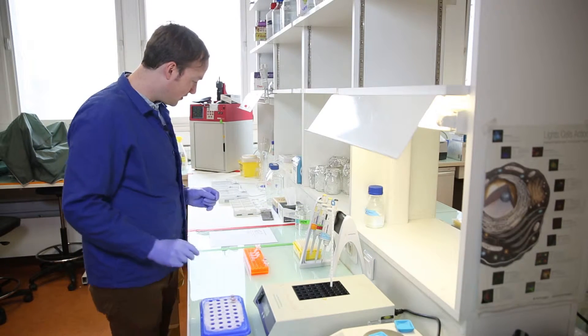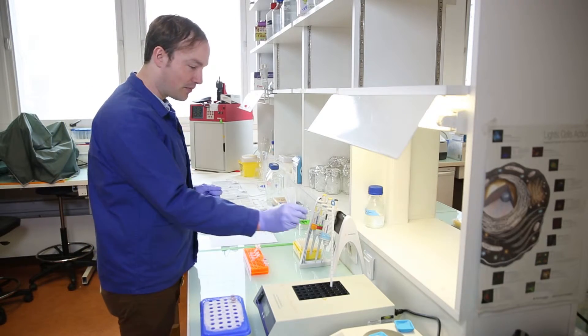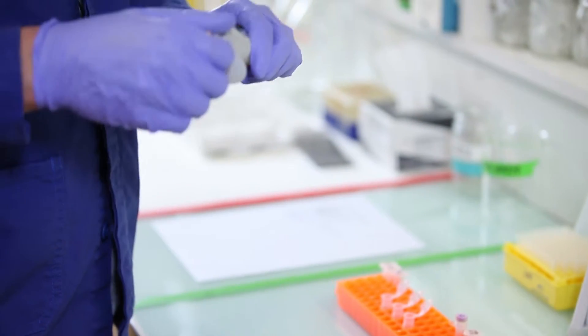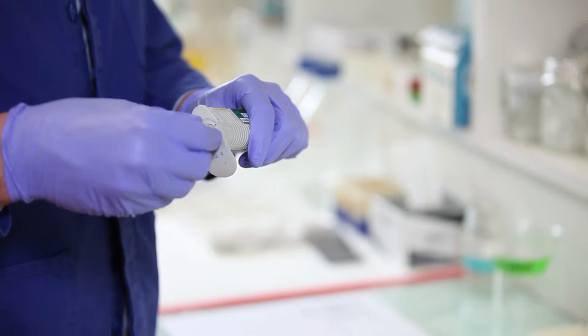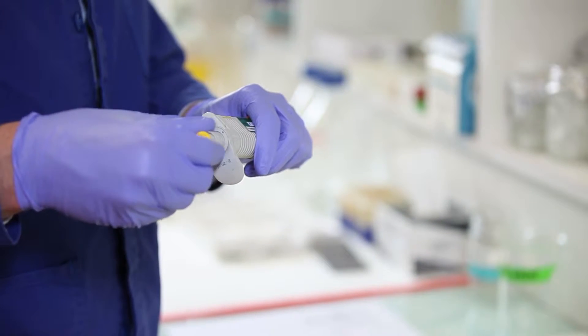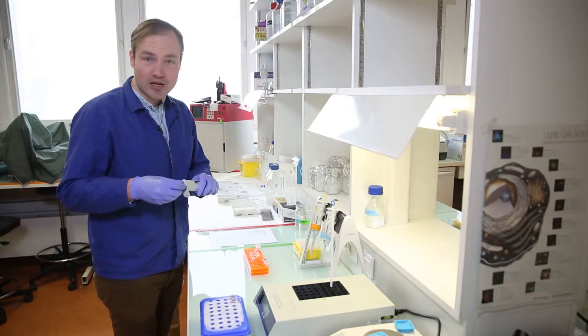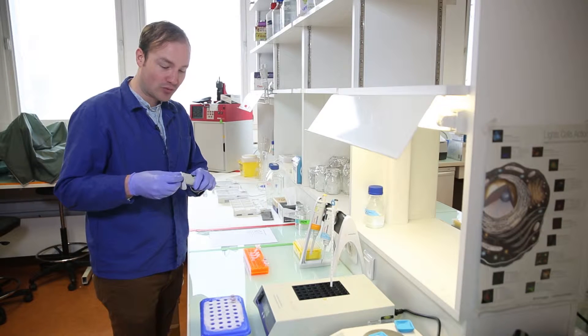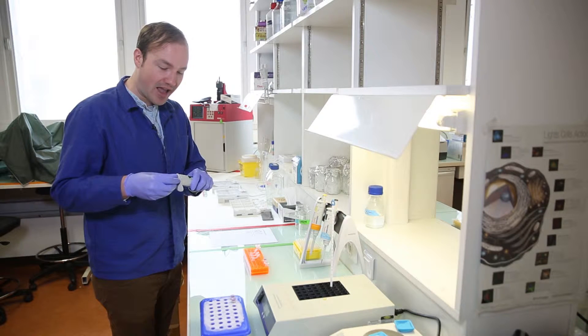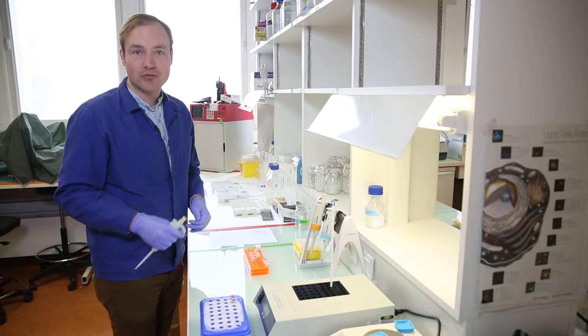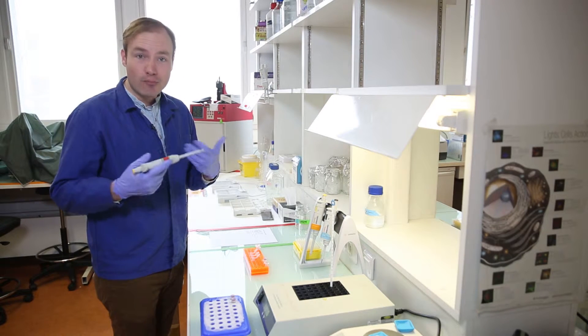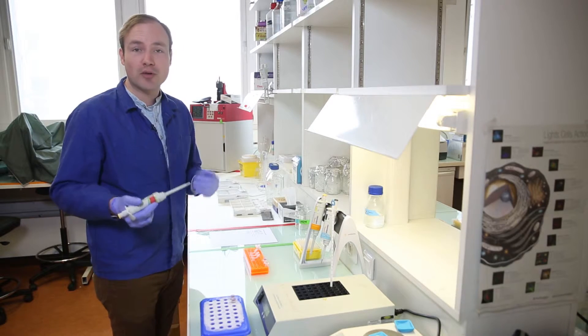Next, 10 microliters of buffer. This is a buffer specific to the restriction enzymes that we'll be using in this digest. Restriction enzyme buffers provide two things: a pH buffer, because most restriction enzymes work best around neutral pH, and they're a source of magnesium ions. Restriction enzymes and most enzymes in biology work much better if they have magnesium ions.